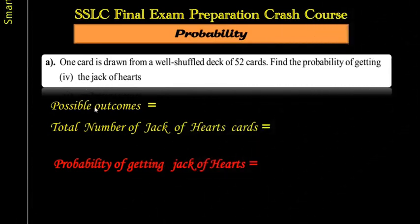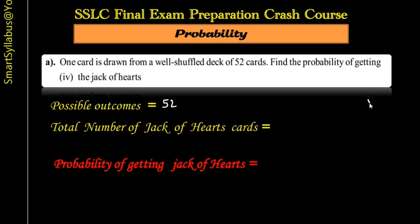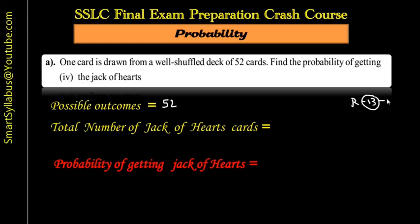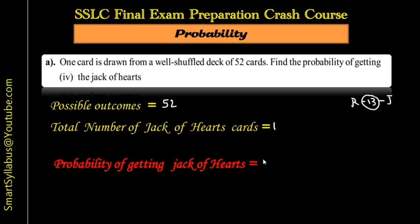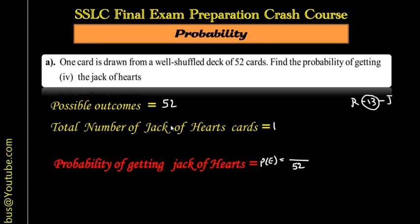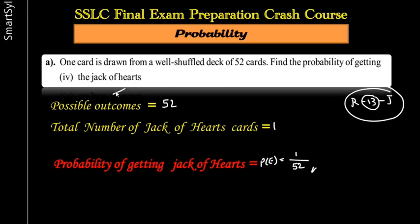Fourth sum: find the probability of getting the jack of hearts. Possible outcomes: 52. Total number of jack of hearts — there are 13 heart cards, red in color. Among those 13 cards there is only one jack. So the total number is just one. P(E) = 1/52. We cannot divide further — this is the final answer. These sums are easy as long as you know how to analyze what the question is asking about the cards.